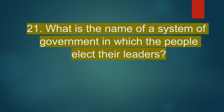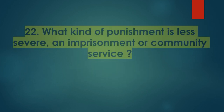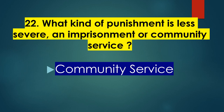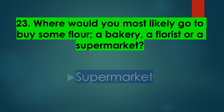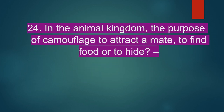What is the name of a system of government in which the people elect their leaders? Democracy. What kind of punishment is less severe — imprisonment or community service? Community service. Where would you most likely go to buy some flour — a bakery, a florist, or a supermarket? Supermarket. In the animal kingdom, what is the purpose of camouflage — to attract a mate, to find food, or to hide? To hide.